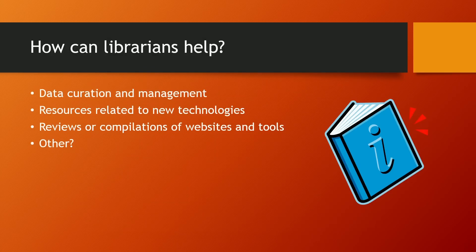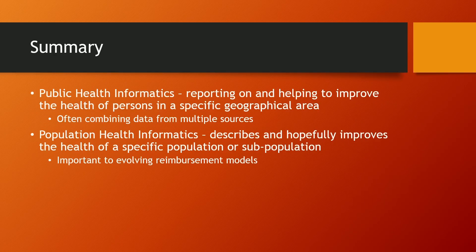How can librarians help? Data creation and management, resources related to new technologies — we need to be able to find data and information about evolving technologies. Reviews or compilations of websites and tools, because not everyone has the time and knowledge to do that kind of curation themselves. In summary: public health informatics is reporting on and helping to improve the health of persons in a specific geographical area, while population informatics describes and hopefully improves the health of a specific population or subpopulation.